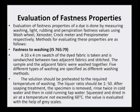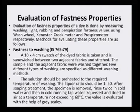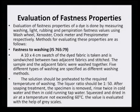For washing fastness, a 10 cm by 4 cm swatch of the dyed fabric is sandwiched between two adjacent fabrics and stitched. The sample and adjacent fabric are washed together. Five different washing methods are specified. The solution is preheated to the required temperature with a liquor ratio of 1:50. After soaping treatment, the specimen is rinsed twice in cold water, then in tap water, squeezed, and dried in air at a temperature not exceeding 60°C. The value is evaluated with gray scales.